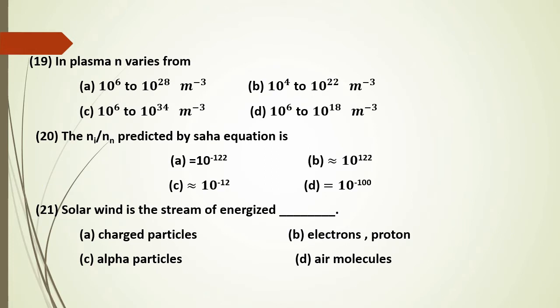In plasma, the plasma density n varies over a very wide range. The correct range is from 10^6 to 10^34 particles per cubic meter — that is 28 orders of magnitude. So n varies from 10^6 to 10^34.